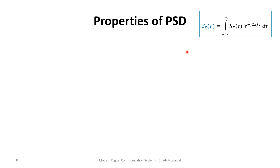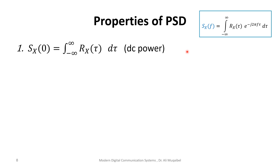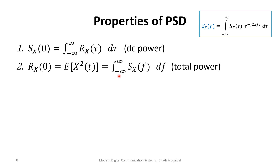Properties of the power spectral density: recall that the PSD, being the Fourier transform of the autocorrelation, evaluated at f = 0 represents the area under the autocorrelation curve. The DC power gain is related to the area under the autocorrelation. Similarly, setting τ = 0 in the autocorrelation gives E[x²], which equals the area under the PSD, obtained via the inverse Fourier transform evaluated at τ = 0.